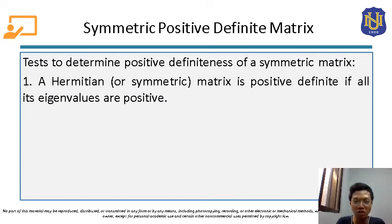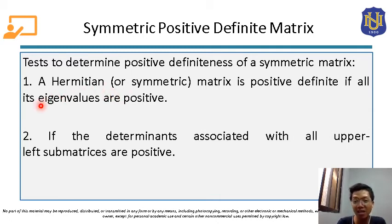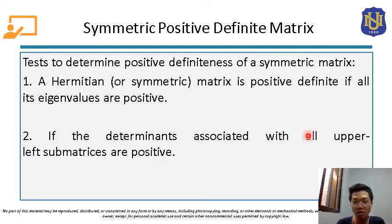There are two tests to determine positive definiteness of a symmetric matrix. Test 1: a symmetric matrix is positive definite if all its eigenvalues are positive. Test 2: if the determinants associated with all upper left submatrices are positive. We'll use these tests to check if a given symmetric matrix qualifies for Cholesky decomposition.